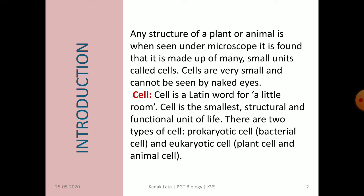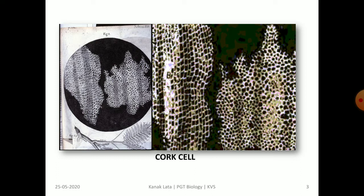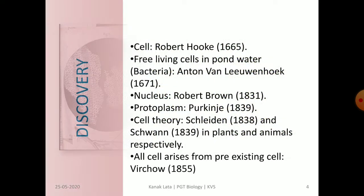Cell may be prokaryotic like a bacterial cell, or eukaryotic like plant and animal cell. In the given figure, you may observe the cork cell which was seen by Robert Hooke under his crude microscope. Cell was discovered by Robert Hooke in the year 1665. Antoine van Leeuwenhoek in the year 1671 discovered bacteria as free living cells in pond water.